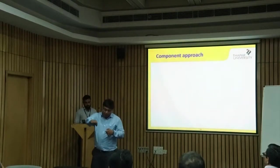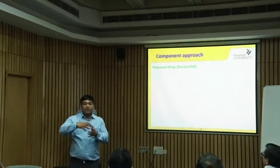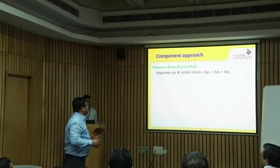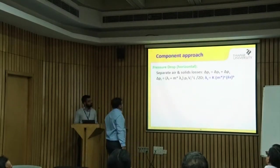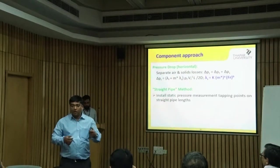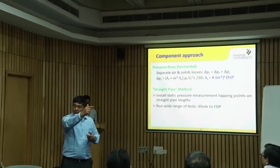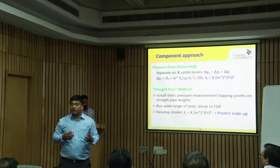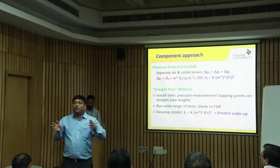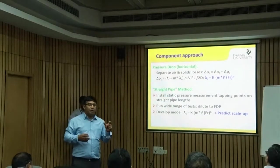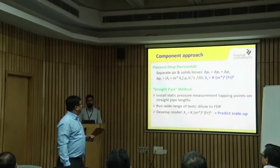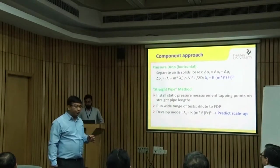This approach is unreliable unless your laboratory layout and actual plant have very similar geometry. Most of the time that won't be the case. The other approach we take is to model every pressure component separately. In the pipeline we have straight pipes — horizontal and vertical — bends, and initial acceleration (as material exits the blow tank, accelerating from zero to line velocity). For long horizontal lengths with bends, the majority of losses come from the straight pipe and the bends.